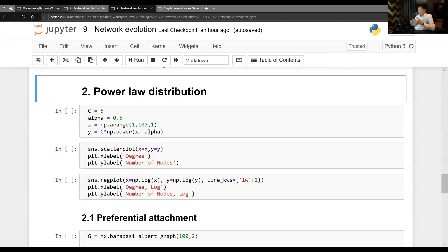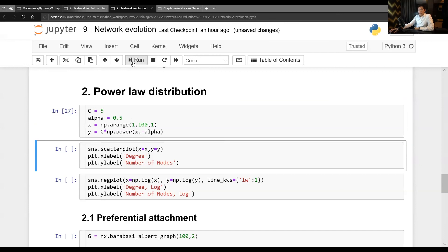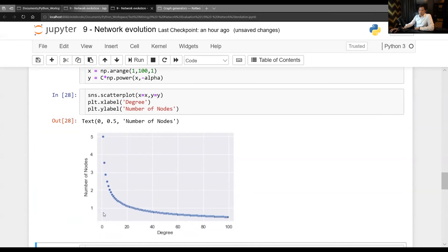And plot the scatter plot between this. You can see that based on power loss, the larger value that you have, the smaller number of nodes that you would gain here.